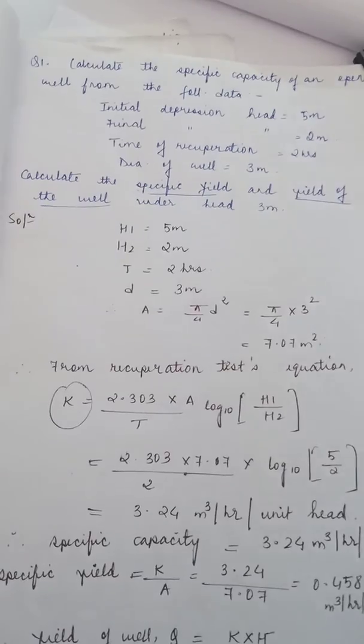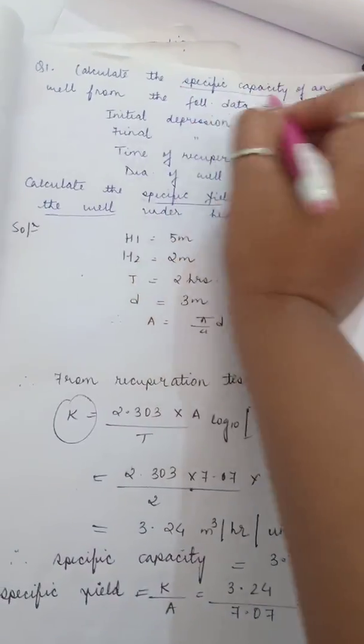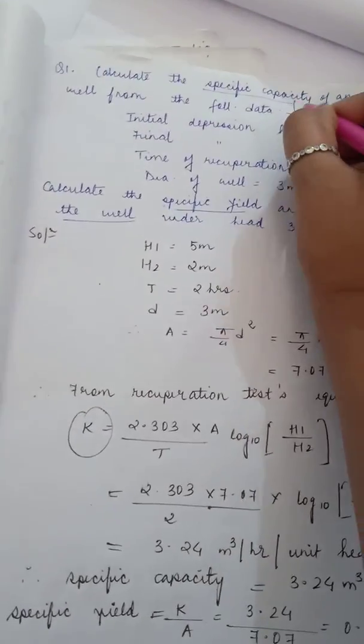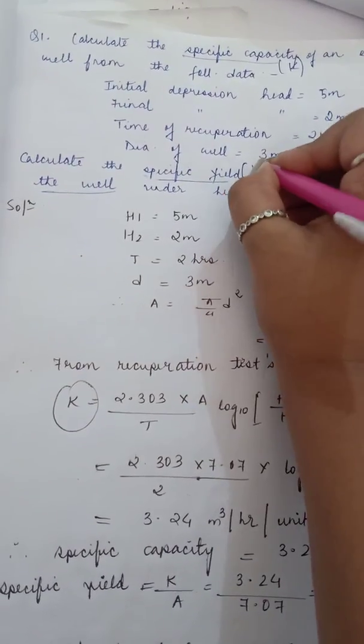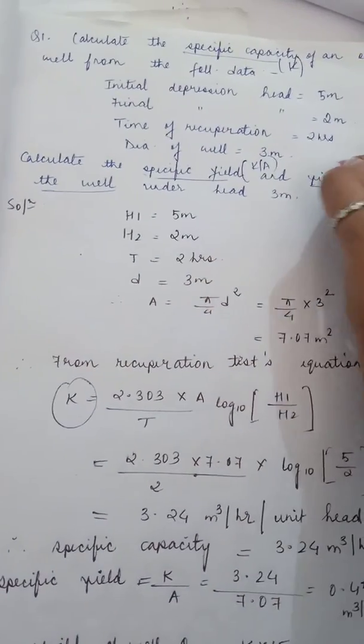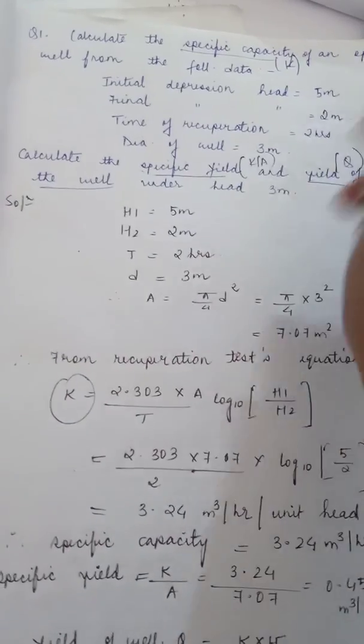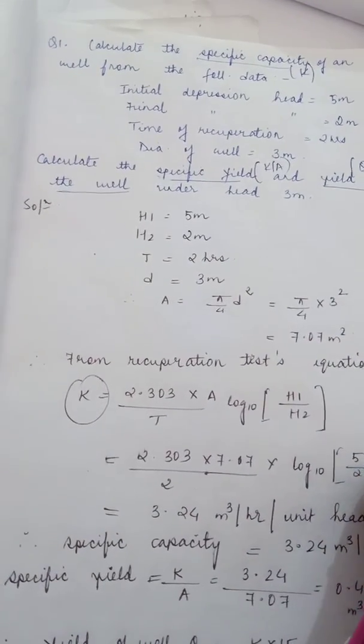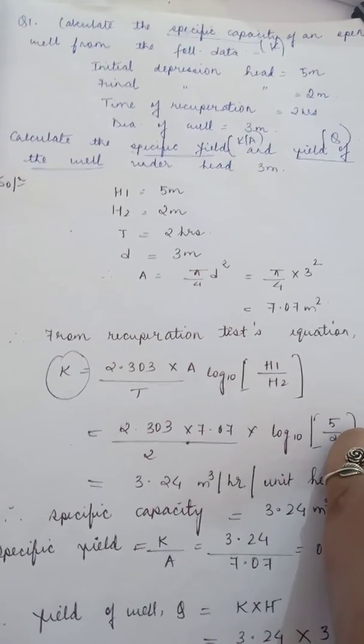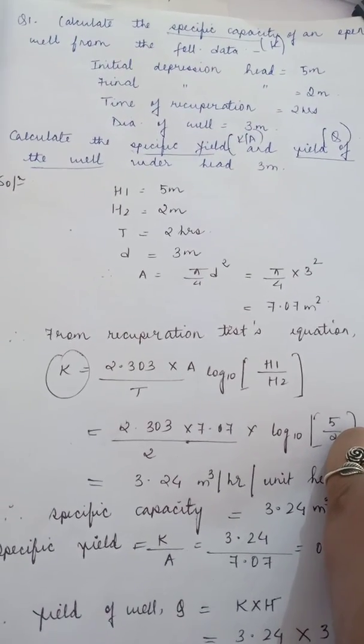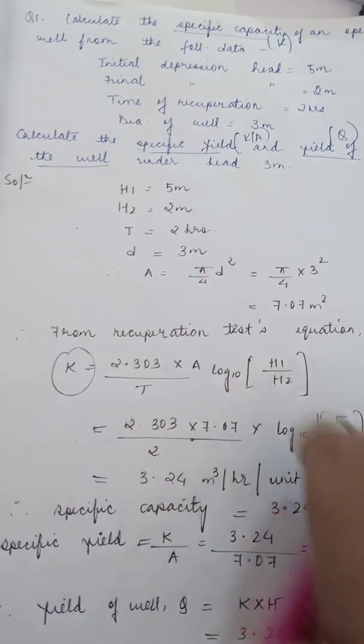We are also asked to find out the specific yield and the yield of well under the head 3 meters. In this question we need to find three things: specific capacity denoted by capital K, specific yield denoted by K/A, and yield denoted by Q under the head 3 meters.